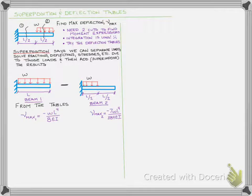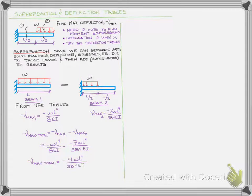If we subtracted the negative 7WL to the fourth over 384EI from the first beam, we could say that our max total would be the max from the first beam minus the max from the second beam. Because we're subtracting a negative value, we're actually adding that, we're superimposing it, and we would get negative 41WL to the fourth over 384EI. That's quick. That's a heck of a lot faster than integrating.